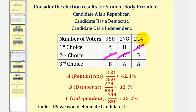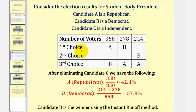By doing this, we would assign these 214 votes to candidate B. Notice how by using this method, there's no incentive for the independents to vote for the Democrat just so the Republican would lose, because they know if their candidate is eliminated, their votes will be assigned to their second choice. So if you eliminate candidate C, the Republicans still have 358 votes, but now the Democrats have 214 plus 278 votes, which gives them approximately 57.9% of the votes, and therefore a majority, and therefore candidate B is the winner using the instant runoff method.